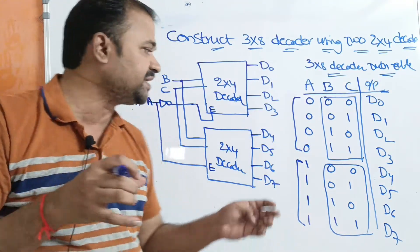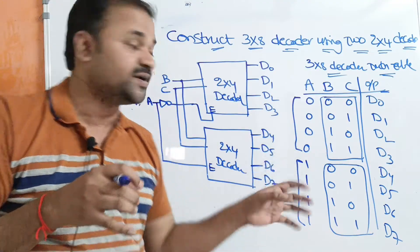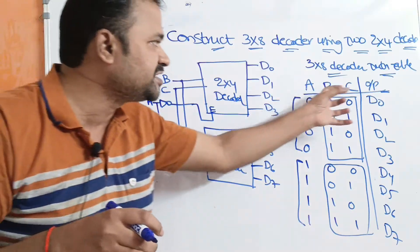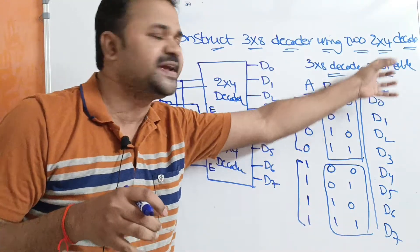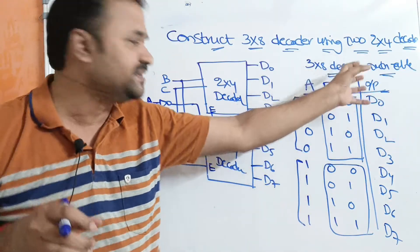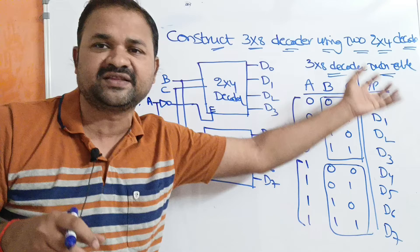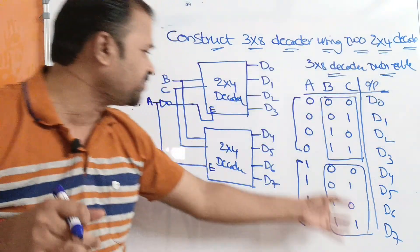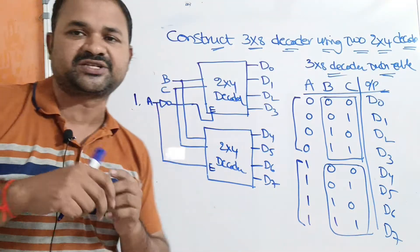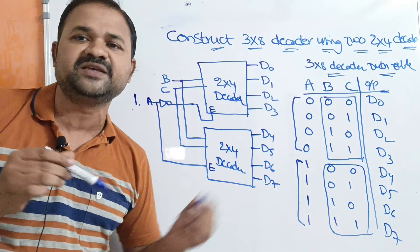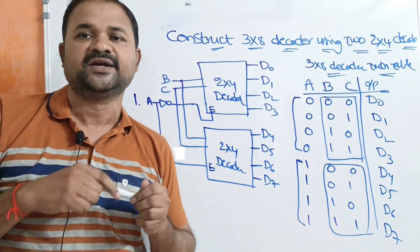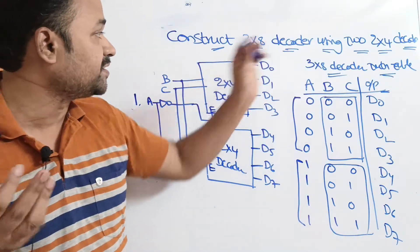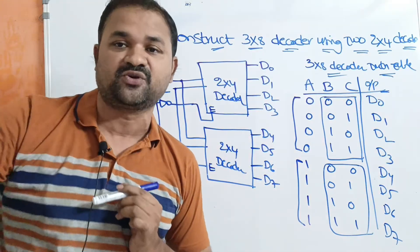With this we can conclude that this diagram is correct. These two decoders together produce the 3x8 decoder output, which is exactly the truth table for the 3x8 decoder. So this is how we design a 3x8 decoder with the help of two 2x4 decoders.